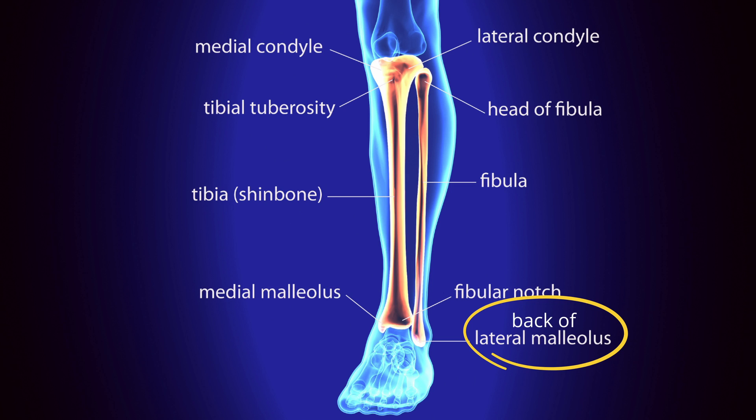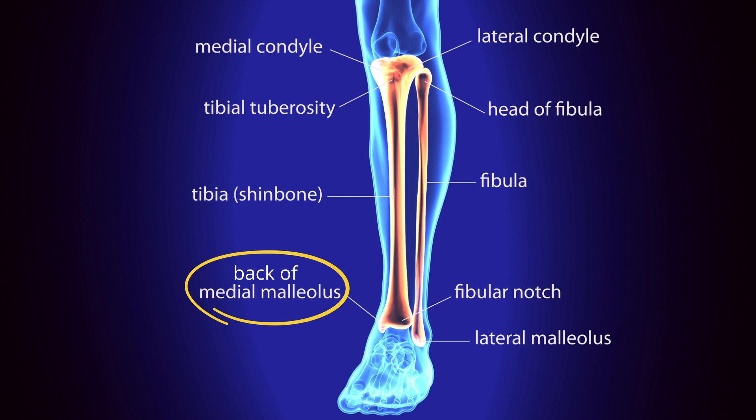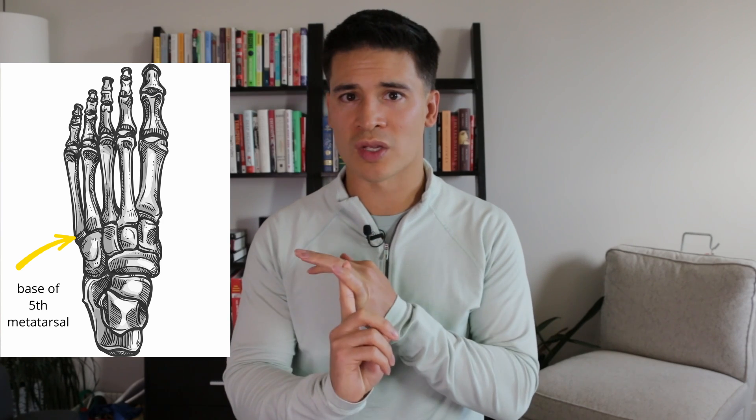With either of these ankle injuries, it's important that we rule out a fracture, and typically the way that we do this is with something called the Ottawa rules. We're looking for tenderness in one of four different areas: the posterior part of the lateral malleolus, the posterior part of the medial malleolus, the base of the fifth metatarsal, and the navicular bone. If we have tenderness in any of these areas plus the inability to bear weight or take some steps on that foot, then we should probably get an x-ray to make sure that there's no fracture.